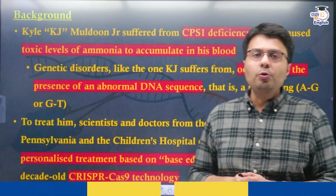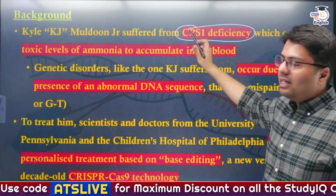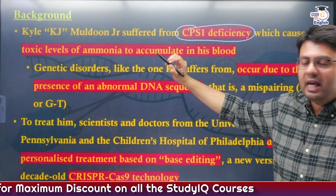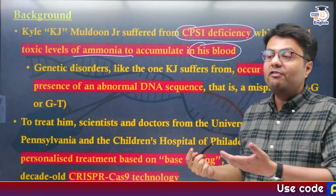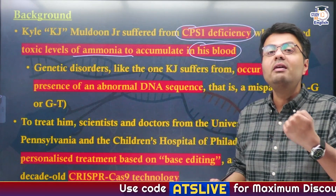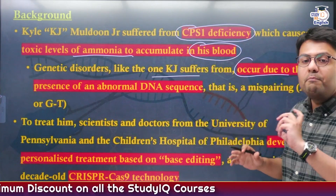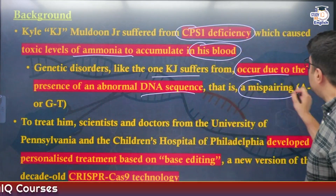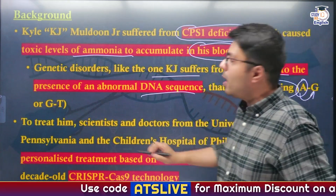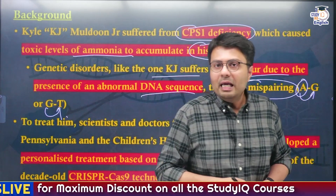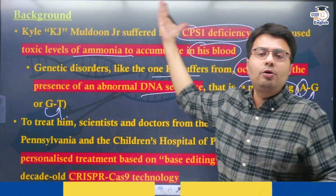Kyle Mudlun Jr., KJ, is the name of the kid we are talking about, and he suffered from a genetic disorder known as CPS1 deficiency. Because of this CPS1 deficiency, it led to accumulation of toxic levels of ammonia in his blood, which if not controlled can even lead to the death of the patient. This genetic disorder occurs due to abnormality in the DNA sequence — for instance, if adenine instead of being paired with thymine gets paired with guanine, or if guanine instead of being paired with cytosine gets paired with thymine, this leads to abnormality in the DNA. This DNA abnormality existed in KJ and led to CPS1 deficiency.